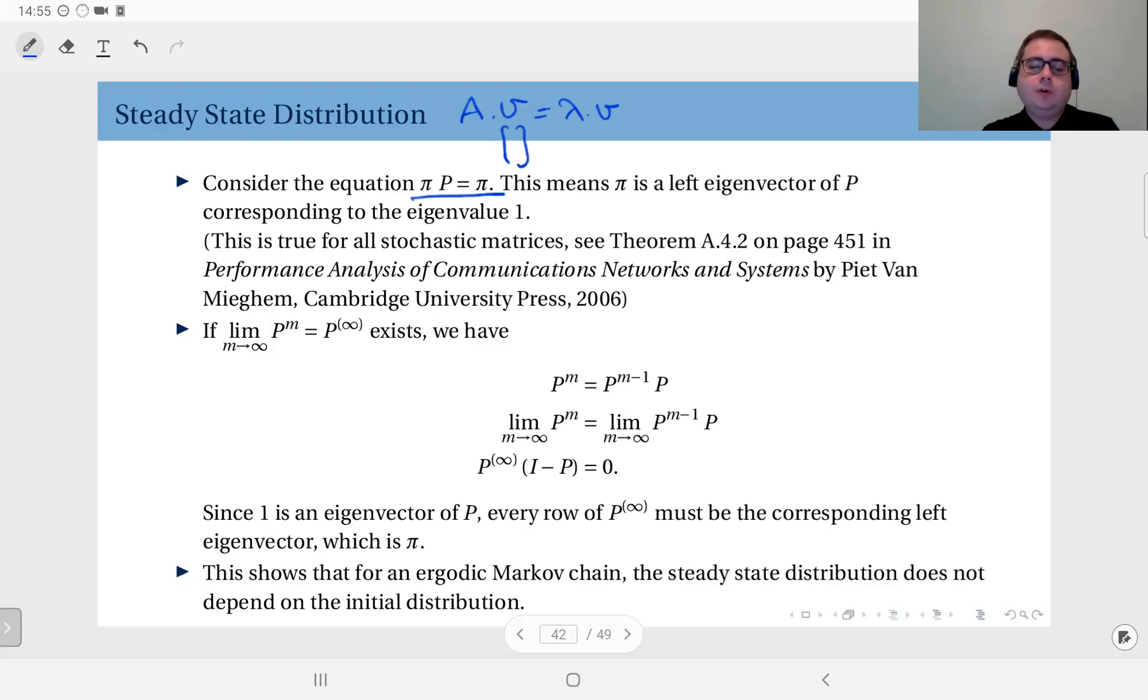When you have this equality for a λ, v pair, we say that λ is an eigenvalue of matrix A and v is the corresponding eigenvector. And this is the usual case where in fact v is the right eigenvector, but in our context we will deal with left eigenvectors.